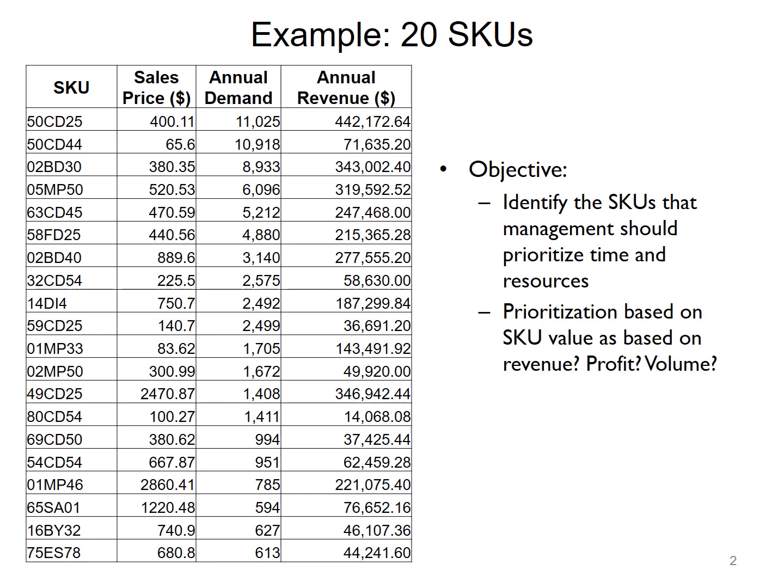Should the prioritization of the SKUs be based on revenue, profit or volume? This will depend on the application and the organization. In certain situations it might be we want to actually prioritize based on revenue or it might be based on the profit margin, might be the volume or some combination.